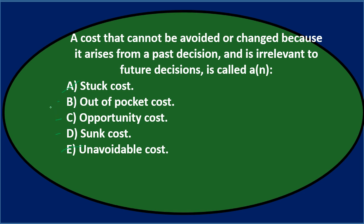Let's go through it again. A cost that cannot be avoided or changed because it arises from a past decision and is irrelevant to future decisions is called B, out-of-pocket cost; C, opportunity cost; or D, sunk cost.